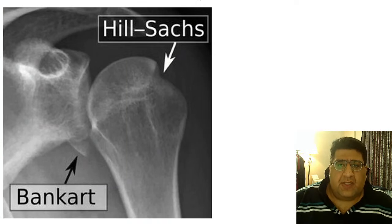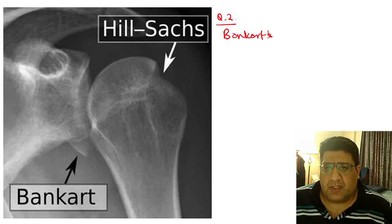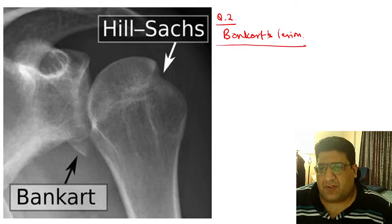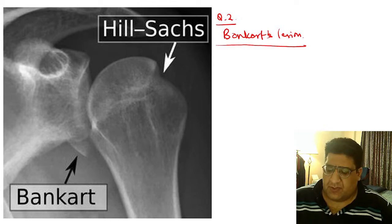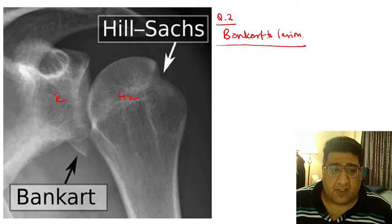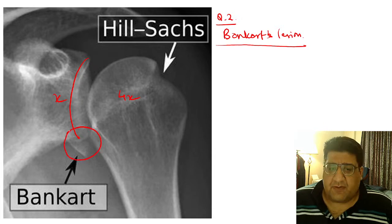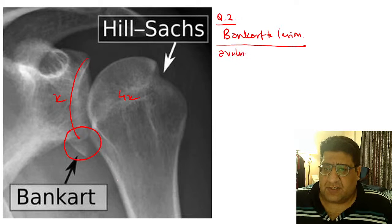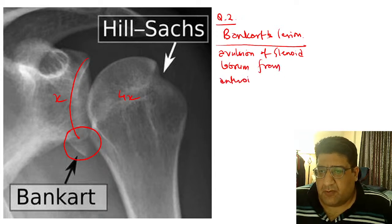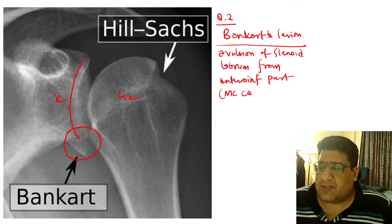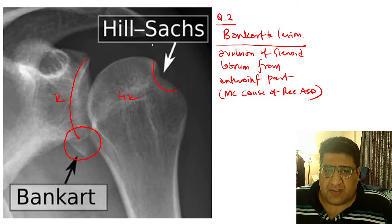Then there was another question on this omnipresent MCQ topic: Bankart lesion. The shoulder is a glenohumeral joint, a ball-and-socket joint where the anatomy is very disproportionate — the small glenoid has to accommodate a four-times-bigger head of the humerus. The glenoid is lined by a layer of fibrocartilage called the labrum. If the labrum gets avulsed from the antero-inferior part — that is what is called Bankart lesion. It is the most common cause of recurrent anterior shoulder dislocation.